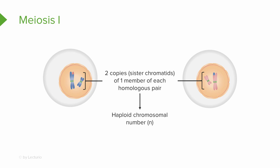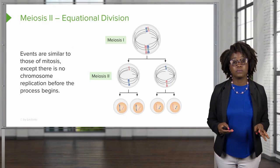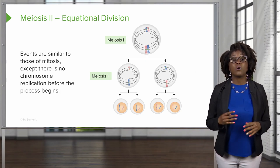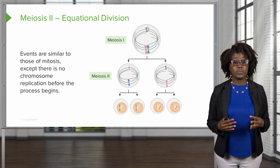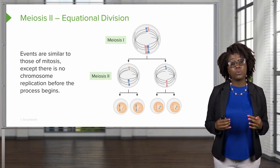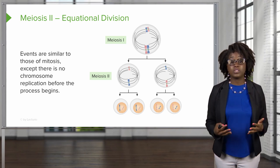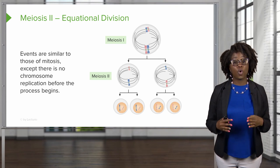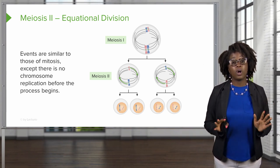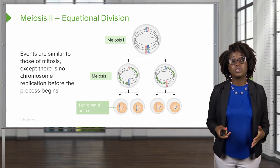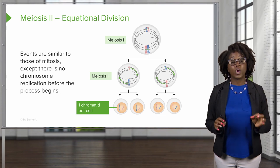We now have a haploid chromosomal number. Even though we are still in sister chromatid format, there is only one of each type of chromosome in the two daughter cells. After meiosis I, the cells will undergo a second division, referred to as the equational division of meiosis. The events in meiosis II are similar to mitosis, except there is no chromosomal replication before this process begins. The sister chromatids from meiosis I are separated toward opposite poles, resulting in one chromosome per cell.